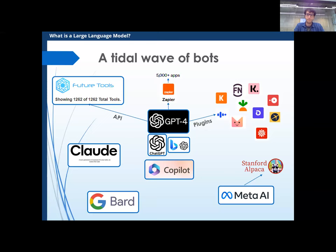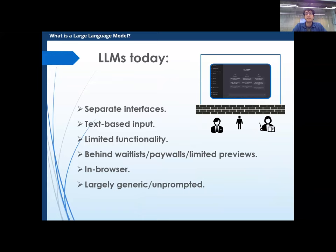I want to encourage you to think about language models not as they are today, because today we're seeing the alpha version of generative AI. Right now we have GPT, which is a clunky text interface in a browser with very limited functionality. To access the pro version or plugins, you have to pay. It's in browsers, so you have to access it through a certain interface, and everyone gets the same ChatGPT regardless of what we want it to do.